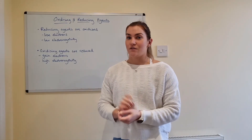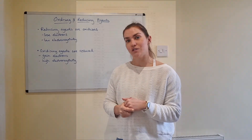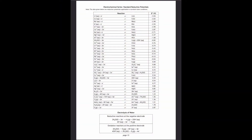Now we're going to look at how the data booklet can help us identify good and bad oxidizing and reducing agents. Here is the electrochemical series — you'll find it on page 13 of the updated Higher and Advanced Higher data booklet, or page 12 if you've got an old one. We've got reduction reactions going from left to right. The best reducing agents are at the top right-hand corner, so lithium is the best reducing agent. When looking for a reducing agent, look on the right-hand side — R for reducing, R for right.